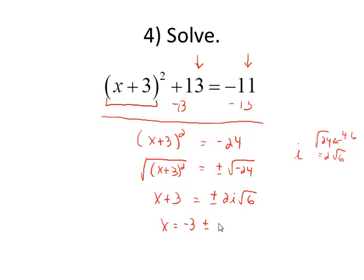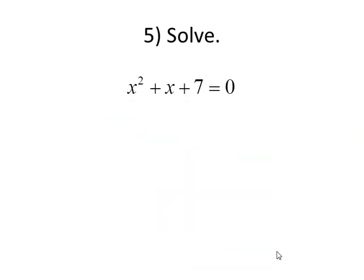So putting that all together, I get x equals negative 3 plus or minus 2i square root 6. So we have negative 3 minus 2i root 6 and negative 3 plus 2i root 6.